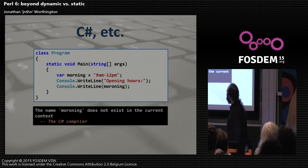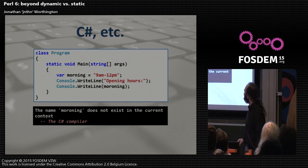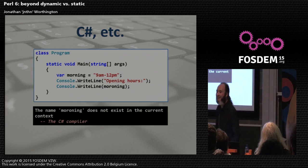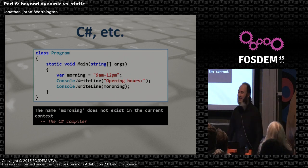The C# compiler is going to say the name 'Moroning' doesn't exist in the current context.